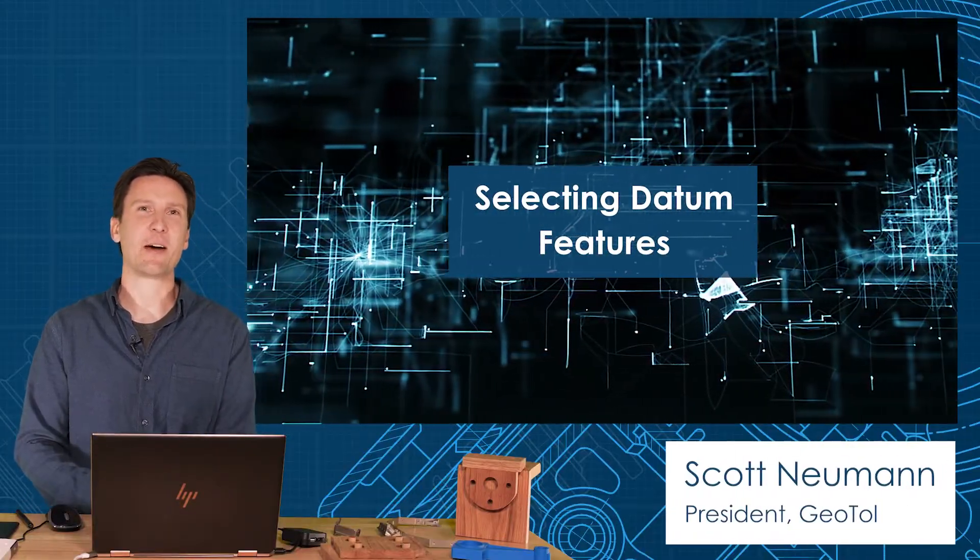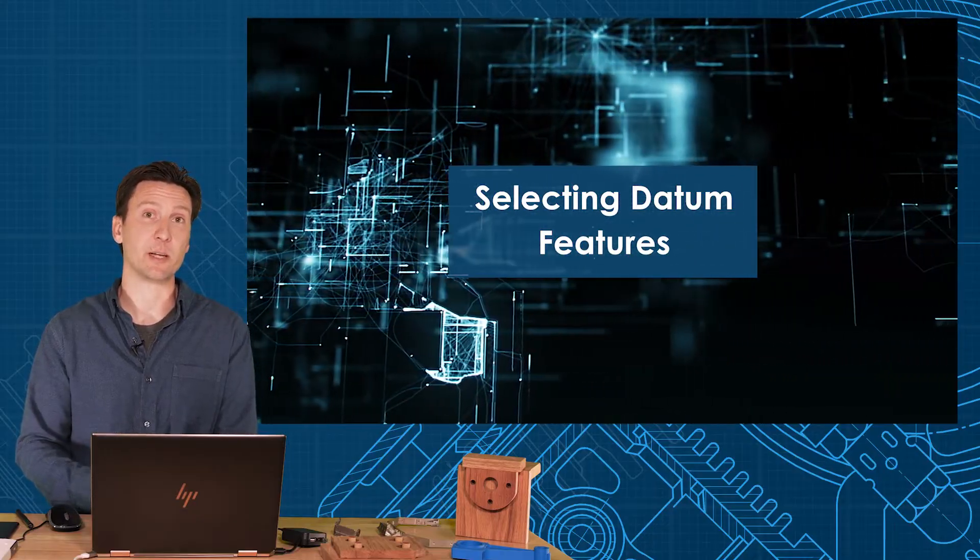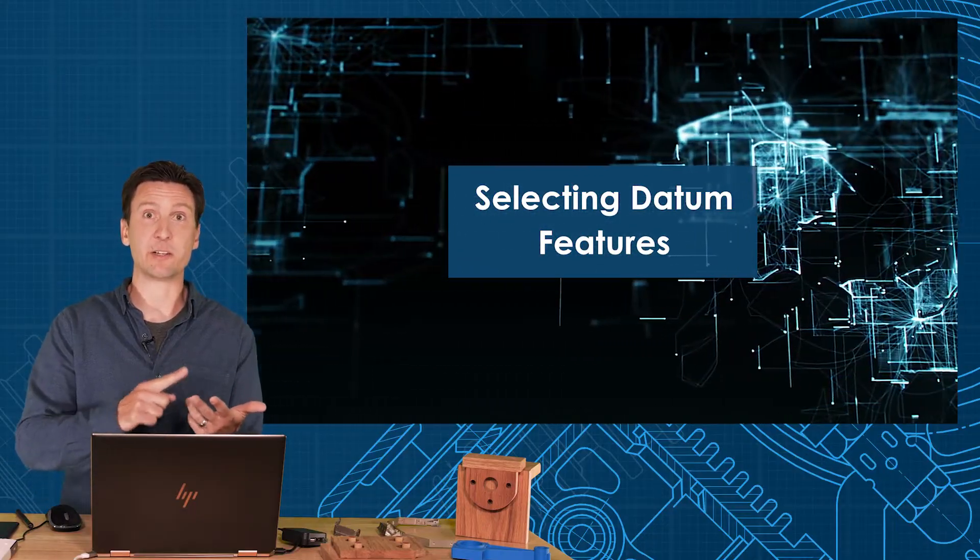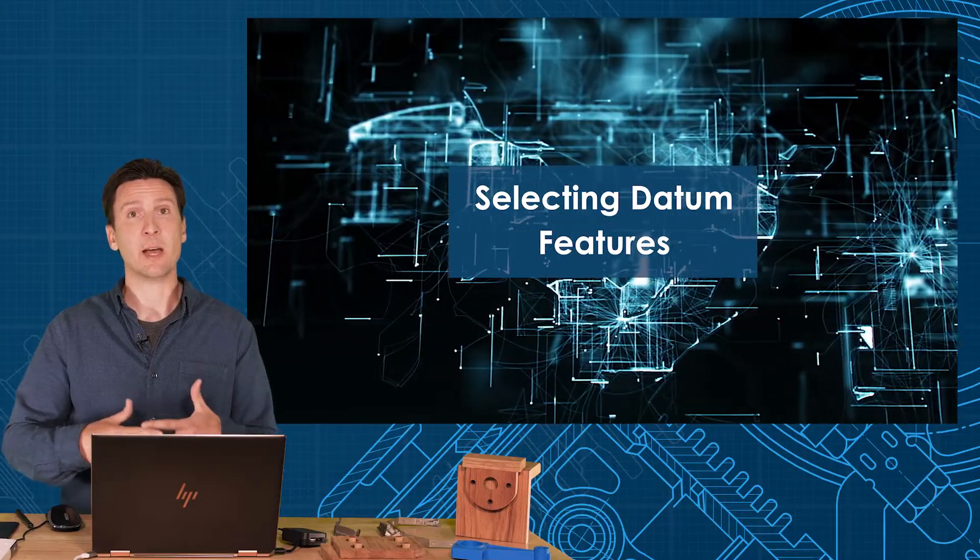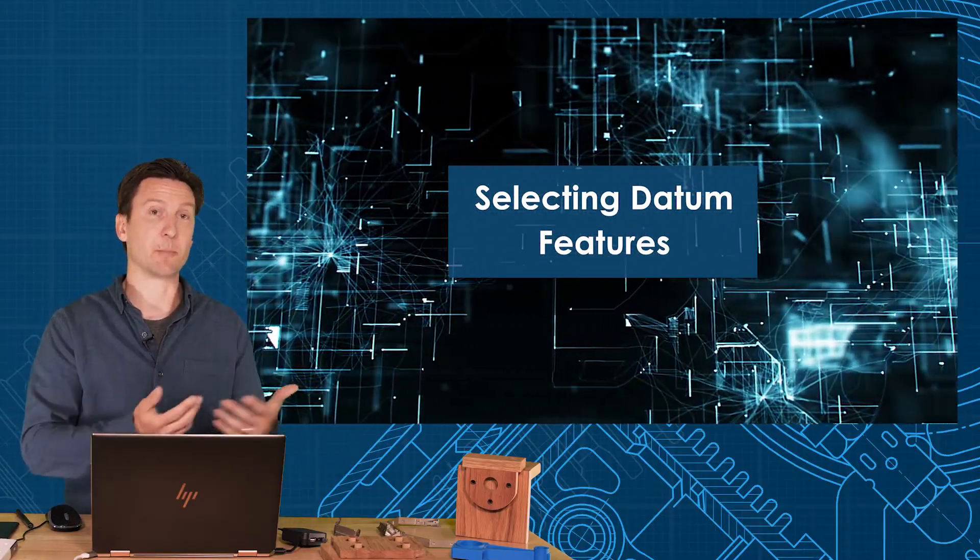Welcome. In this video we're going to talk about how to select datum features. It's arguably one of the most difficult things to do in your tolerancing scheme—select a primary, secondary, and tertiary based on function. I'm going to show you a series of examples for how we can do this on different example parts.